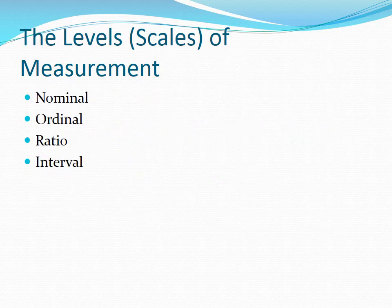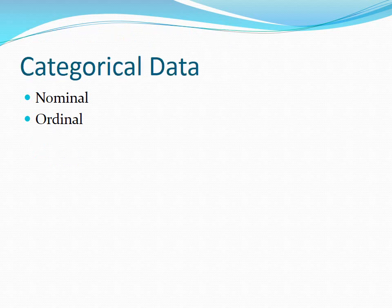There are four levels of measurements that are used: nominal, ordinal, ratio, and interval. Categorical data is broken into two separate areas — nominal and ordinal. Categorical data is just what it sounds like: it's categories, placing data in categories.